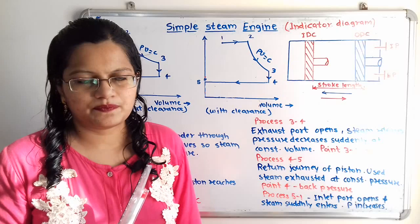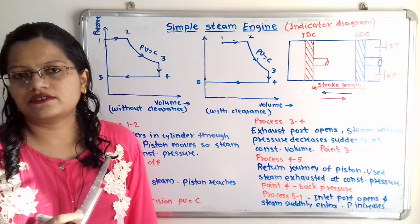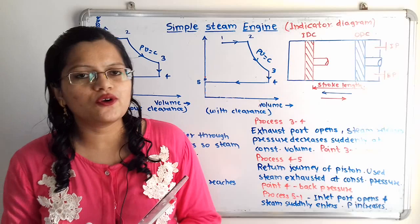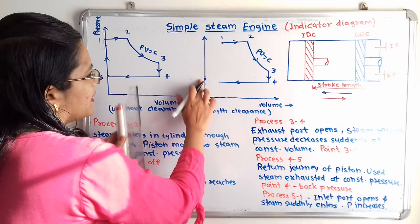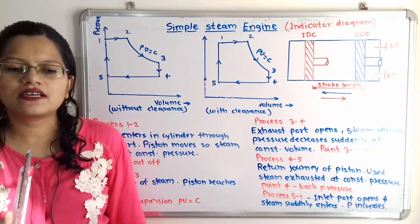During process 5 to 1, the inlet port opens and steam suddenly enters. As steam enters suddenly, pressure increases at constant volume. We show increasing pressure at constant volume from point 5 to point 1, keeping the clearance space for the with-clearance diagram. This completes the indicator diagram cycle.